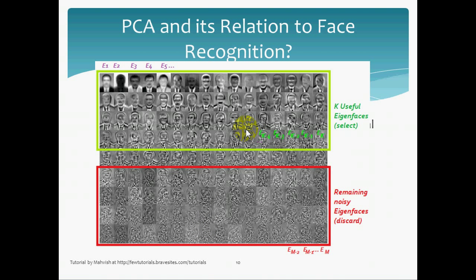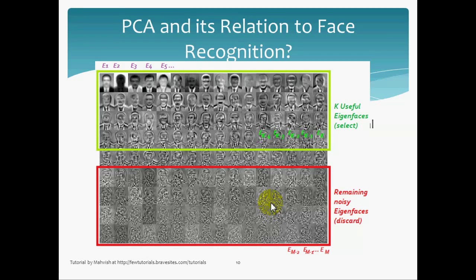Looking at the image we had before: these were the total eigenfaces calculated after reducing the dimensionality. Even from these, we could select only the most useful K eigenfaces. They are selected by artificial intelligence methods. See — this is the first eigenface, the second, third, and so on until the K-th eigenface. The last eigenfaces, the last principal components, depict more and more noise in the dataset, so they are not very useful. In fact, they could hinder the good results of your predictive model. The key is to discard these last noisy eigenfaces and only keep the K useful eigenfaces.